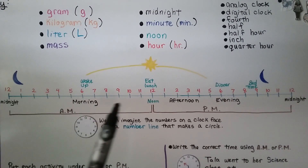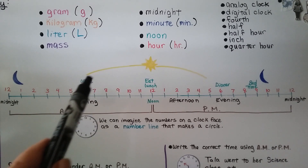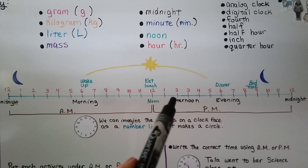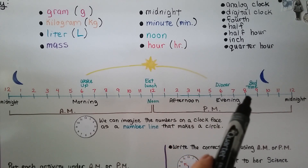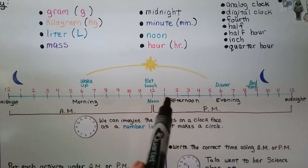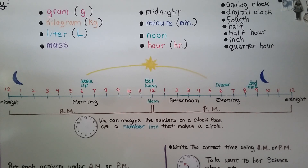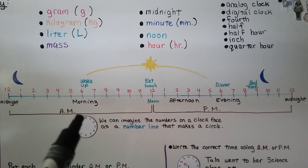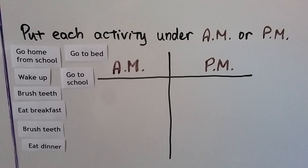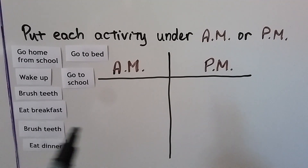Here we have a very long number line that represents one entire day. It starts at midnight in the middle of the night, goes to the morning where the sun's coming up — that's when you would wake up for school — then to noon for lunchtime, then after noon into the evening for dinner, then the sun goes down for bedtime, and back to midnight. This is the A.M. — the first twelve hours — and here's P.M. — the second twelve hours. We can imagine the numbers on a clock face as a number line that makes a circle.